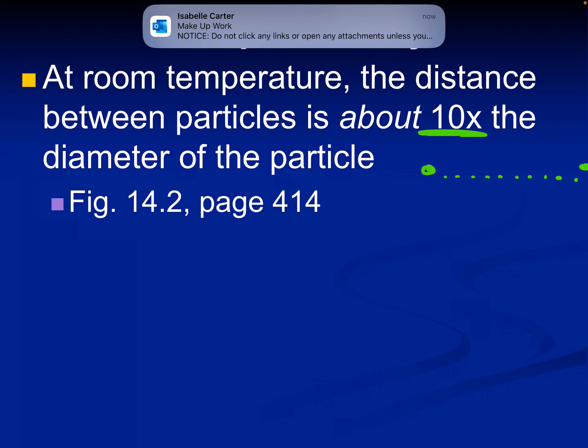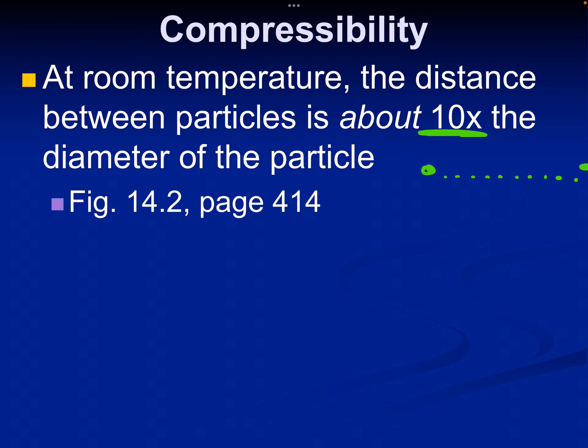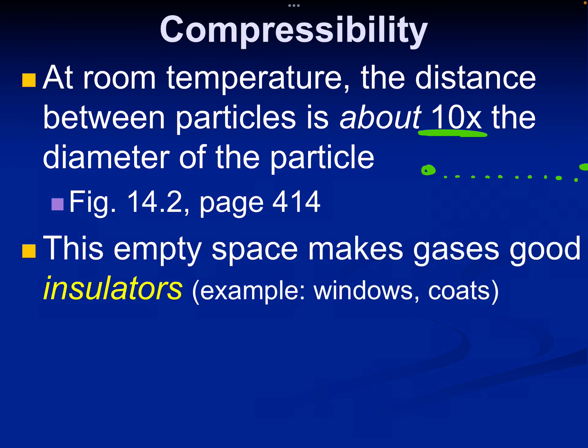So at room temperature, the actual distance between the particles is approximately 10 times the diameter of the particle. So if you had a particle, then it would be 1, 2, 3, 4, 5, 6, 7, 8, 9, 10. That's very approximate, but that's what that would look like.